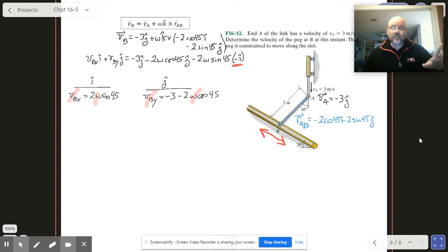That's where we started out over here by realizing that VB is constrained to move back and forth like this. So our workaround for this is to say that VB as a vector is equal to some magnitude times cosine sine 30 I hat.